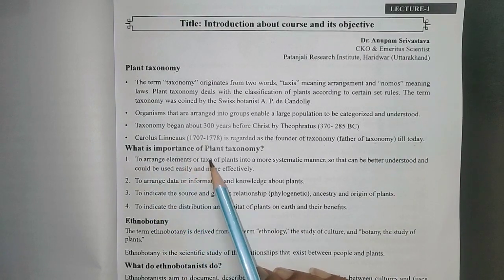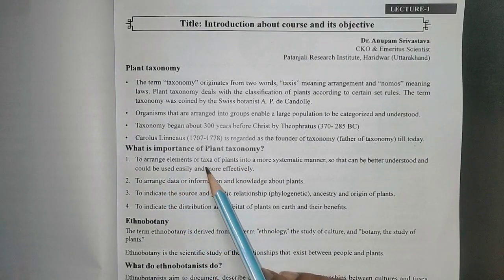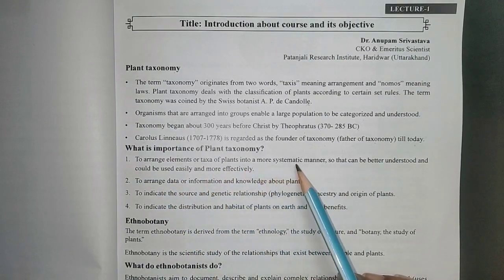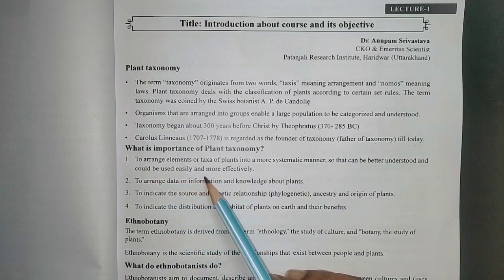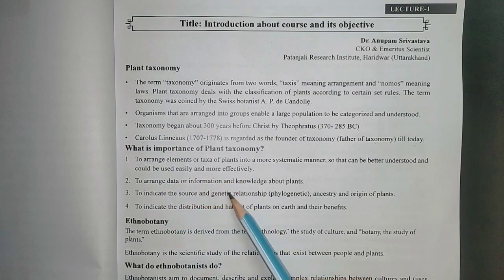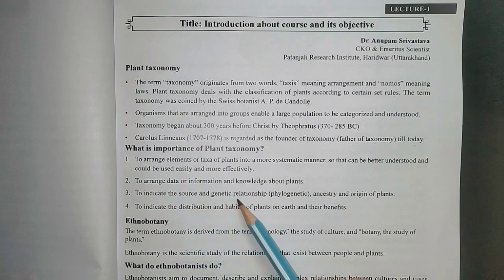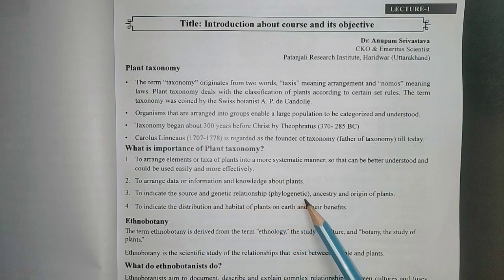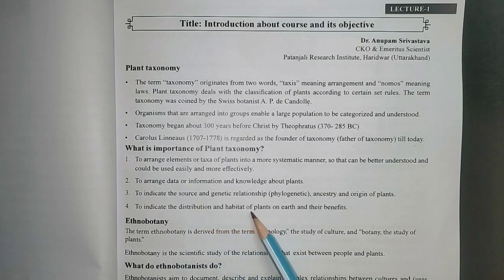What is the importance of plant taxonomy? To arrange elements or taxa of plants into a more systematic manner so that they can be better understood and used easily and more effectively. To arrange data, information, and knowledge about plants. To indicate the source and genetic relationship like phylogenetic ancestry and origin of plants. To indicate the distribution and habitat of plants on earth and their benefits.